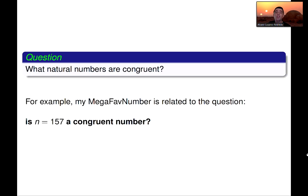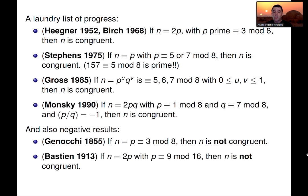All right. So what numbers are, what natural numbers are congruent? So, as I said, my favorite number is related to the question, is n equals 157, a congruent number. So what do we know about congruent numbers? Let me give you a list of some progress, some results that I'm going to just display on the screen. But what I want you to concentrate on is in the second result by Stevens in 1975, proved that if n is a prime and p is 5 or 7 mod 8, then n is congruent. And 157 is a prime, and it is congruent to 5, so it is a congruent number. So now the question is, what is the simplest right triangle of the rational sides that has area 157?